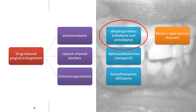Dihydropyridines block the long-lasting type, or L-type, calcium channels, thus blocking the depolarization of vascular smooth muscle cells, cardiac myocytes, and cardiac nodal tissues, which are primarily dependent on calcium influx. The other two groups are more effective in cardiac muscle than in vascular smooth cells. Among all the calcium channel blockers, nifedipine is the most frequently associated with gingival overgrowth. Diphenylalkylamines and benzothiazepines have significantly lower prevalence than nifedipine.